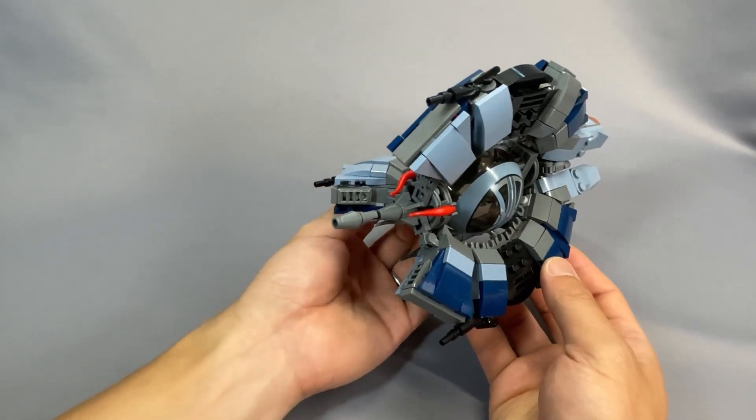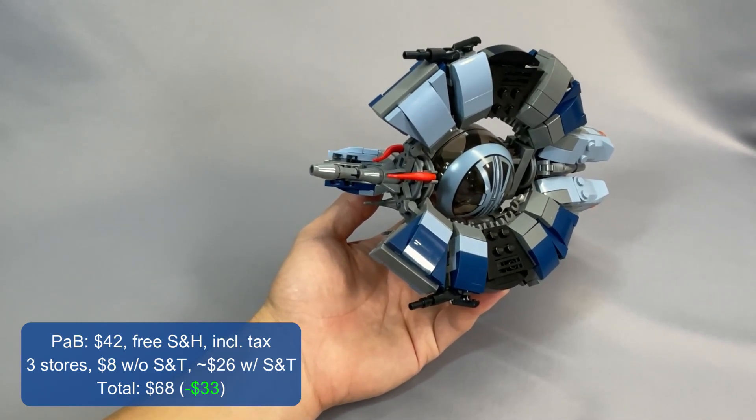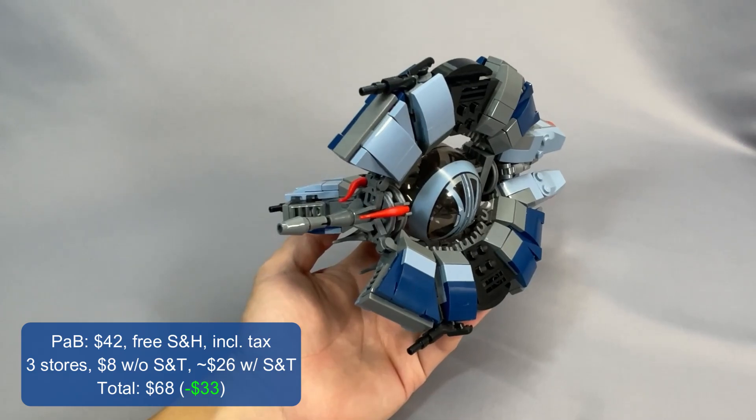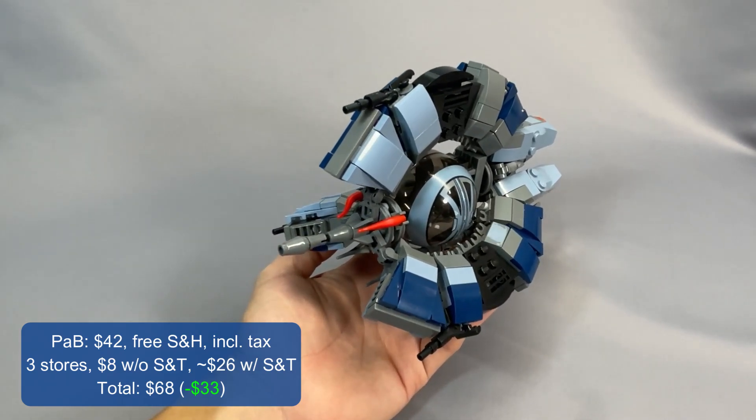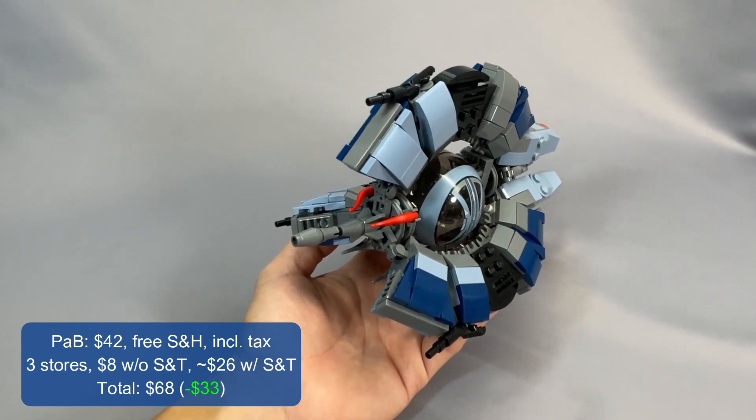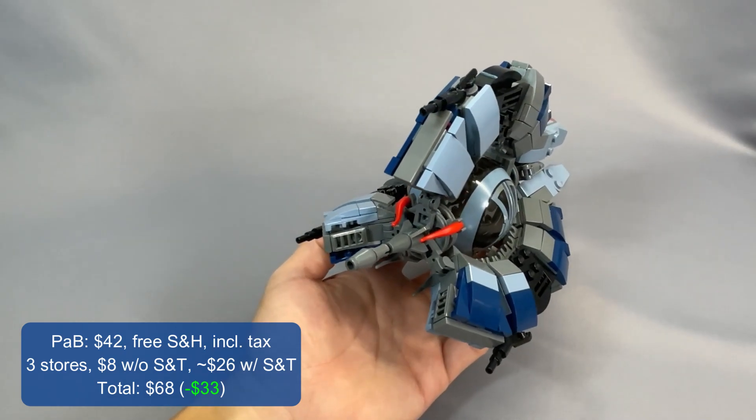And then turning to Pick-a-Brick, my Pick-a-Brick total was $42, and that included free shipping and handling but did include the tax. And BrickLink, the remaining pieces ran me three stores and $8 without shipping and tax, or about $26 with shipping and tax. And the total, therefore, was $68, which is $33 less than if I'd only gone with BrickLink.